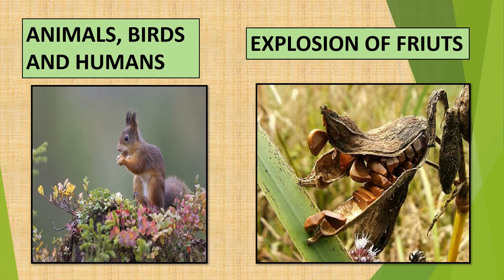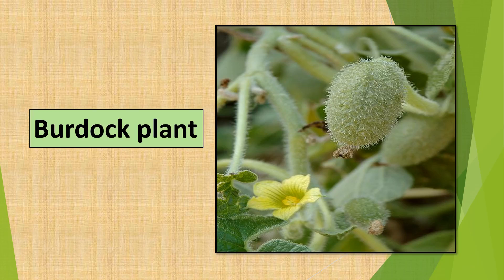Explosion of fruits: pods of some fruits like peas, beans, and balsam burst open or explode when dry, thus scattering their seeds. Burdock plant seeds get stuck on the bodies of animals and are carried to another place. It is because of these seeds that the idea of making velcro came.